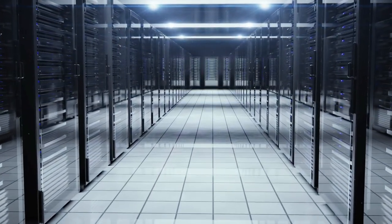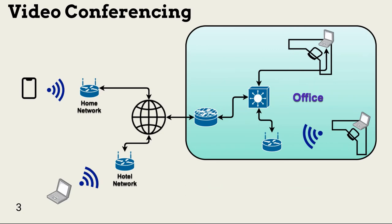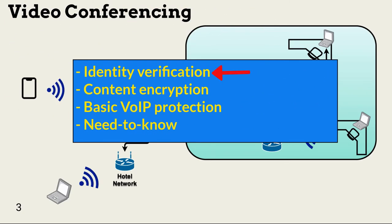Regardless of how video conferencing is implemented, baseline safeguards include identity verification to access the call. The strength of the verification should match the classification of the information discussed at the meeting. Content encryption across the internet and over in-office Wi-Fi. Basic VoIP protection as described in the video above. And ensuring meeting attendee need to know. For highly classified data, attendees should both have the need to know the information discussed and have data owner permission for access.